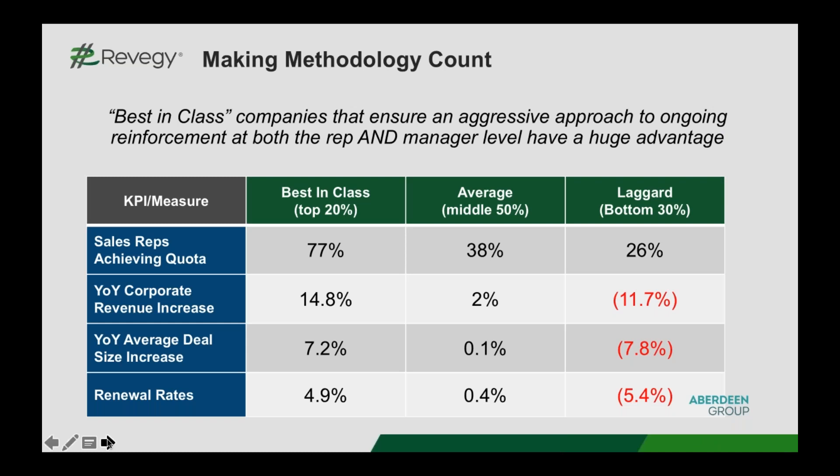What we see going on in the industry related to sales process and sales methodology is that companies make tremendous investments in things like Challenger, Solution Selling, and Miller Heiman, with the intent on driving business outcomes. What we've noticed is that those programs, when well implemented and when you actually make the behavior change, deliver real business value. According to Aberdeen Group, the quality and effectiveness of your implementation of your methodology has a huge impact on business outcomes.